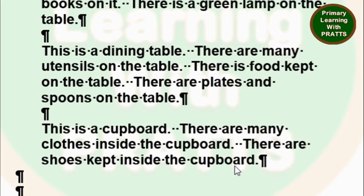We have to remember: we don't have to describe what a fridge is and why it is used — we have to describe each picture, meaning what we can see in the picture. We can see the fridge with food, the table with food and plates, the study table with books, and the cupboard with clothes. You must describe the picture, not the thing itself. You can make your own sentences or mix and match these sentences to complete your lesson exercise.